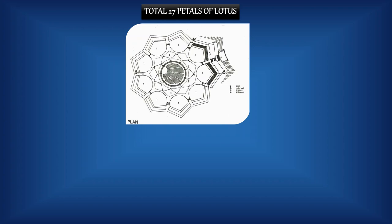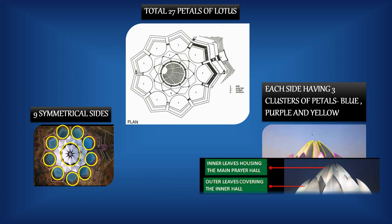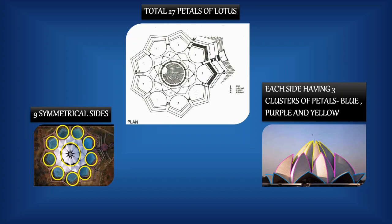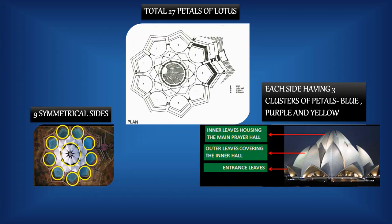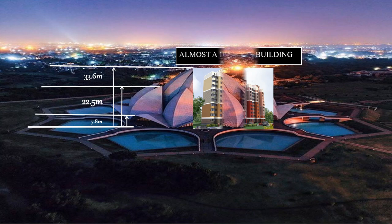You must have already seen the disguised lotus hidden in the structure. This lotus has a fixed number of 27 petals, divided into nine sides, each side having three different petals — indicated by three different colors: blue, purple, and yellow. The smallest are the entrance leaves or petals, the next are the outer leaves covering the interior hall, and the tallest are the inner leaves. The height of the entrance petal is 7.8 meters, the outer petal is 22.5 meters, and the tallest is 33.6 meters. The total height resembles a 10-storey building.